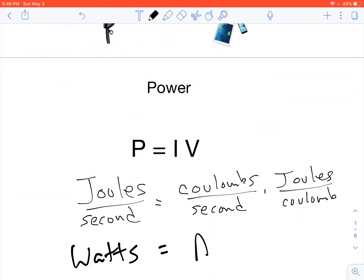Current is in amps, which are coulombs per second, and voltage is joules per coulomb. Now if you look closely, you'll see the coulombs per second and joules per coulomb. The coulombs cancel out and you get the units of power.